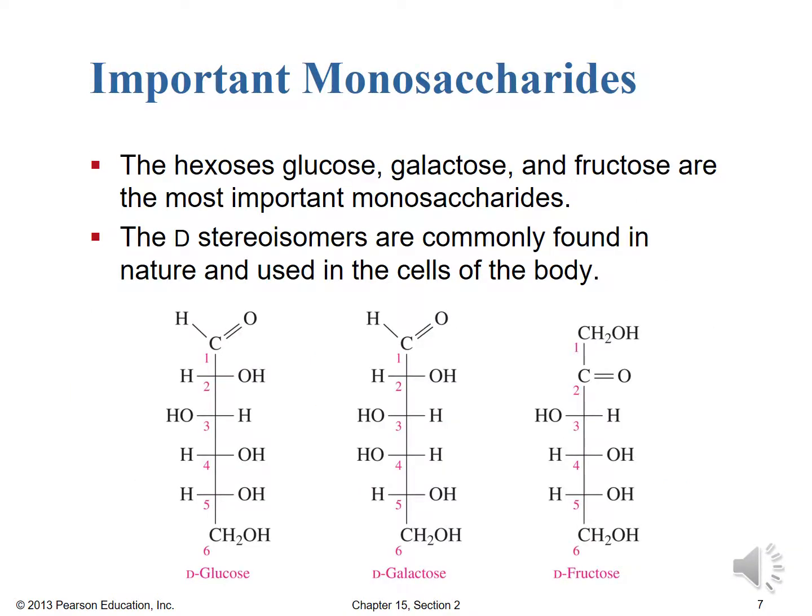Some monosaccharides are more important than others. The hexoses, particularly when talking about fuels, tend to be most important, and within those, glucose, galactose, and fructose are most critical for humans. Glucose is our brain's primary fuel. Galactose is important as mammals rely on milk in infancy. Fructose, commonly called fruit sugar, is a common natural sugar we ingest. The D stereoisomers are commonly found in nature and used in human cells.